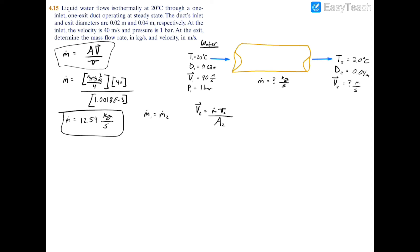Now we just plug in what we have here. So we have 12.54 kilograms per second, and the specific volume is going to be consistent again, 1.0018 times 10 to the negative third, and we're going to divide all this by the area.